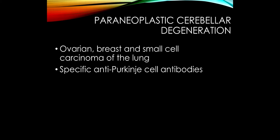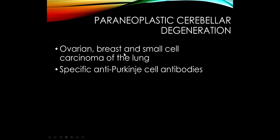Paraneoplastic cerebellar degeneration refers to the indirect effect of cancer on the nervous system. The cancer — which can be ovarian, breast, or small cell lung cancer — is not in the cerebellum, but a dysregulated immune response attacks the Purkinje cells. Patients present with progressive ataxia on a normal brain scan. Specific anti-Purkinje cell antibodies can diagnose this on a blood test, and often the ataxia comes on before the patient is known to have cancer.